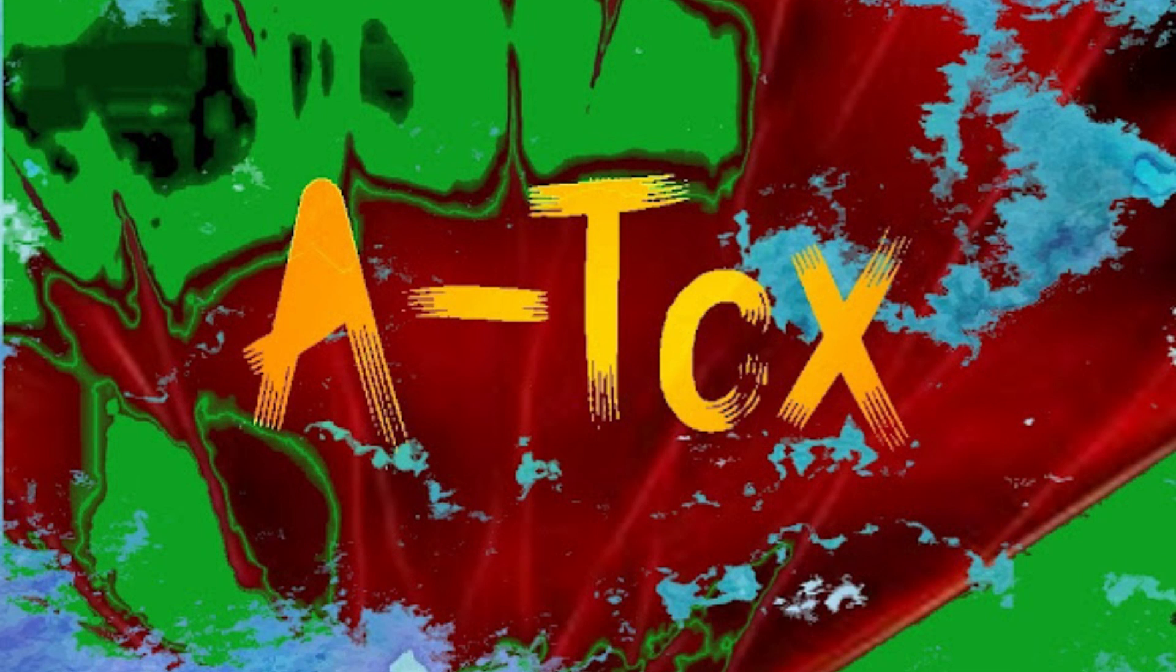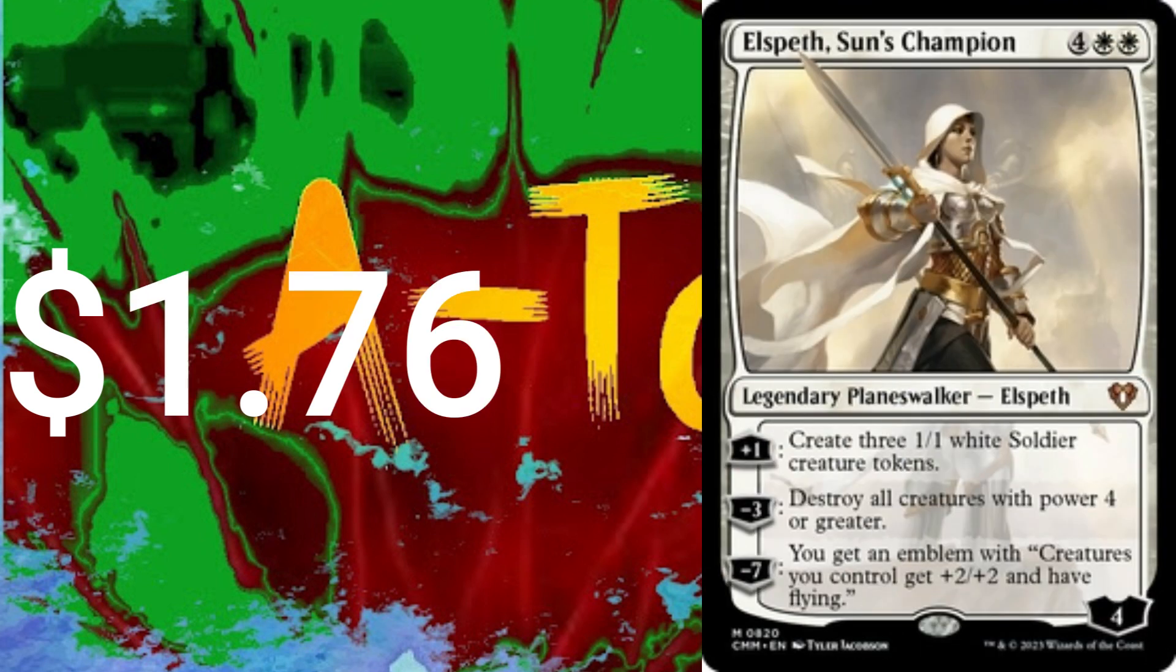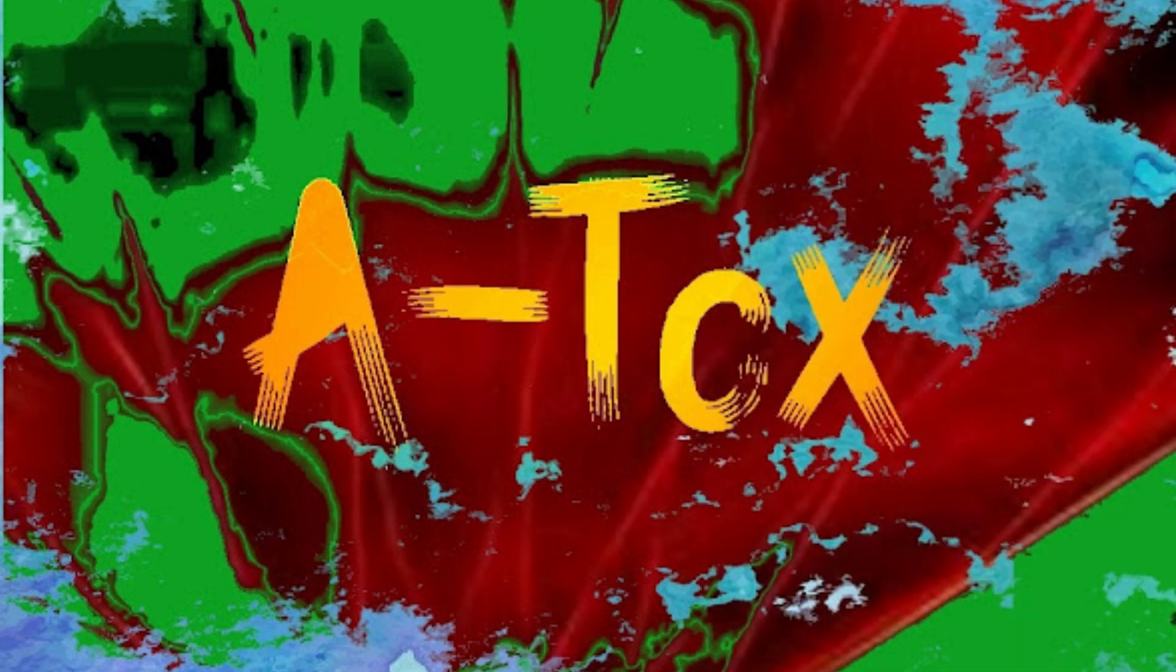We have two planeswalkers in this deck: Elspeth Knight-Errant and Elspeth Sun's Champion. Because who doesn't like destroying everything and making more tokens the next turn.